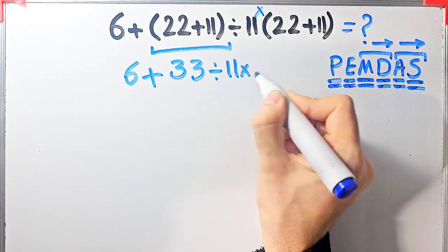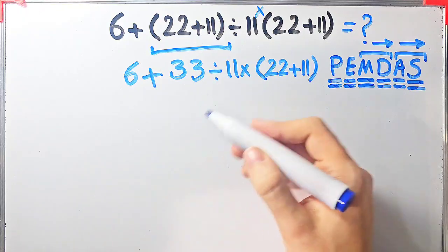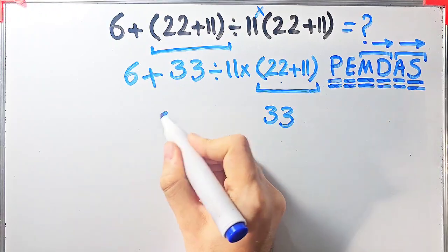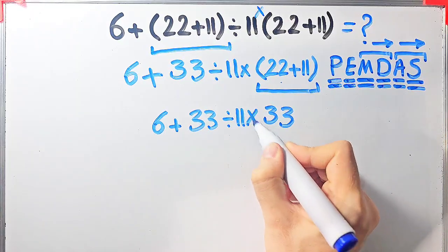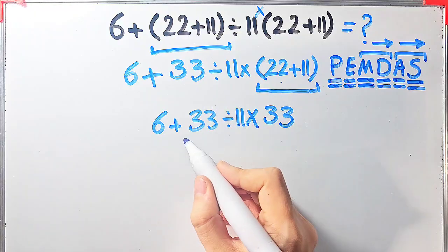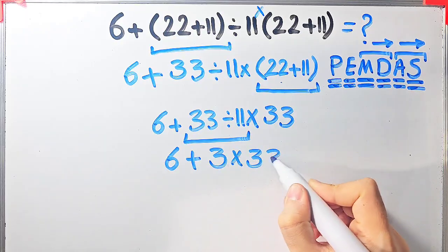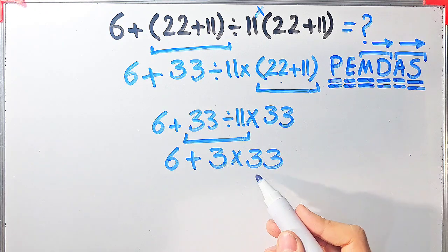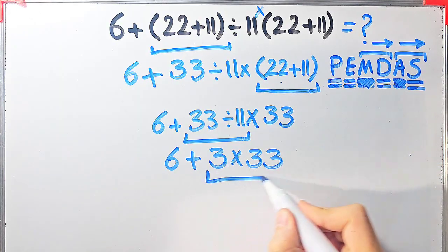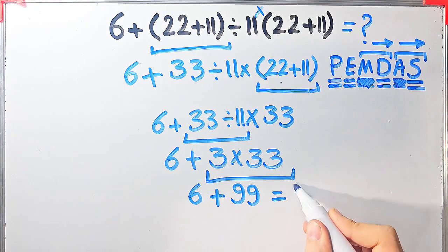Now we have 6 plus 33 divided by 11 then times open parentheses 22 plus 11 close parentheses. Again we simplify the parentheses: 22 plus 11 equals 33. Now the question is 6 plus 33 divided by 11 then times 33. In this step we have addition, division, and multiplication. First we simplify the division: 33 divided by 11 equals 3. Now we have 6 plus 3 then times 33. First we simplify the multiplication because multiplication has higher priority than addition. 3 times 33 equals 99.